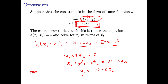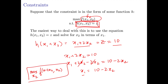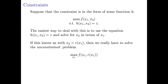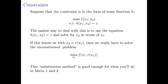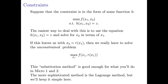So we solve for x1 in terms of x2 and then plug that back into our function. We solve the following maximization problem: choose x2 to maximize f of 10 minus 2x2, and x2. You've got this maximization problem of a single variable, and it's unconstrained. More generally, we take the constraint equation h of x1, x2 equals z, solve for one variable in terms of the other, and substitute back into f. This is called the substitution method, and it's going to be good enough to do most of the things you're going to do. The more sophisticated method is the Lagrange method, but we'll keep it simple here.